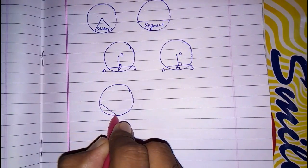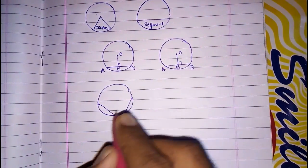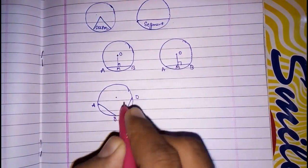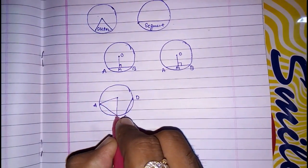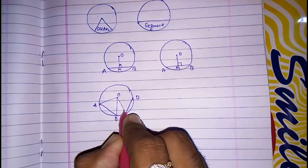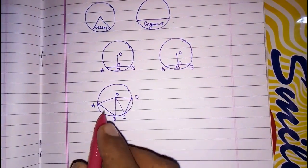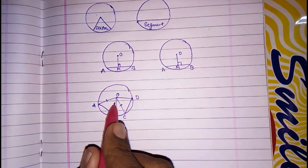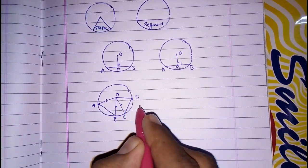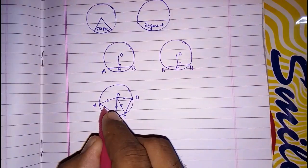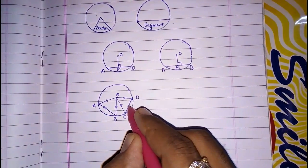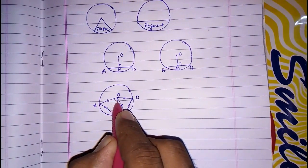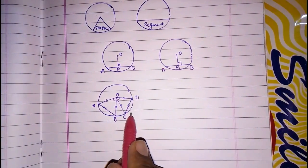If two equal chords are given — meaning AB is equal to CD — then these equal chords will subtend equal angles at the center. We can prove this: AO equals CO and OB equals OD as they are radii of the circle, and AB equals CD as given. So by Side-Side-Side, the two triangles are congruent, and we can say angle AOB equals angle COD by CPCT.